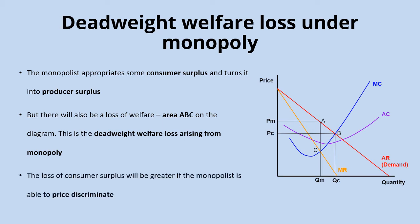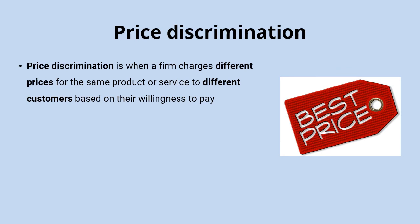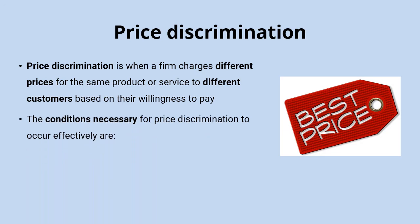The loss of consumer surplus will be even greater if the monopolist is able to price discriminate, which is what we'll look at now. Price discrimination is when a firm charges different prices for the same product or service to different customers, based on their differing willingness to pay. In order to do this, a specific set of conditions needs to be in place.